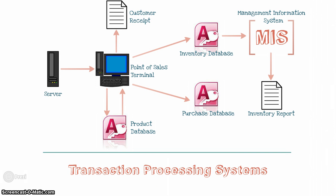I hope you understand that overview of how a point-of-sales terminal is used for conducting a transaction. Understand that there are three separate databases involved: one for accessing each of the products that can be purchased by a customer, one for recording the actual purchasing of each product, and one for the inventory of each product.